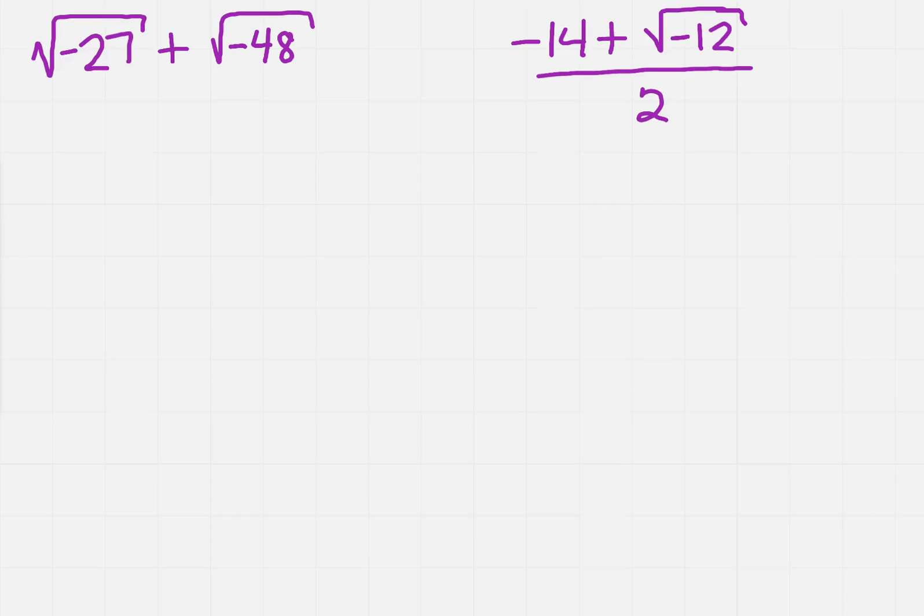When I look at these examples, I notice I've got negative numbers under the radical. So what I want to look at is how do I simplify that? Well, remember we said that i equals the square root of negative 1. So that means I can pull the i out of these.